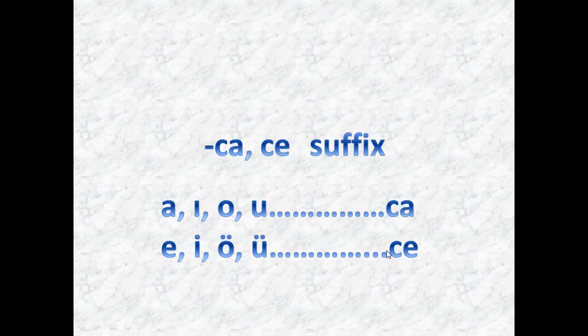Here we have the suffix -ca and -ce, according to the harmony of vowels. If we have the vowels A or O at the last syllable of a word, we will have the suffix -ca. And if we have E, İ, Ö, or Ü, we will have the suffix -ce. When we add these suffixes to a person, subject, or noun, it means 'according to' whatever comes before the suffix.